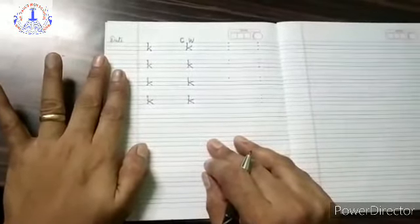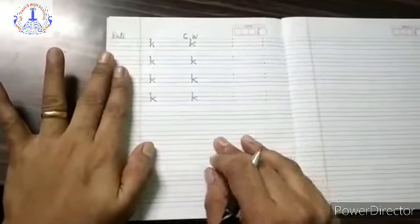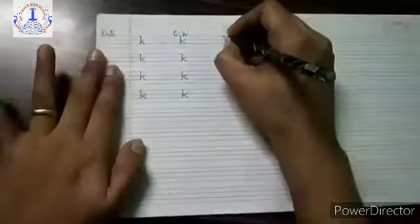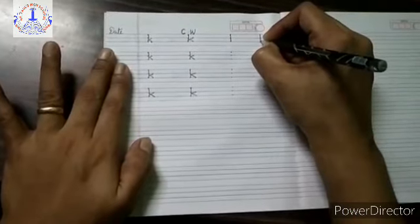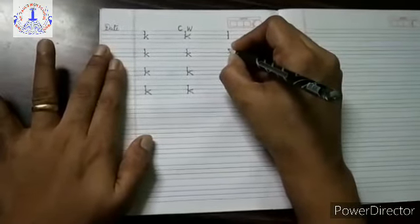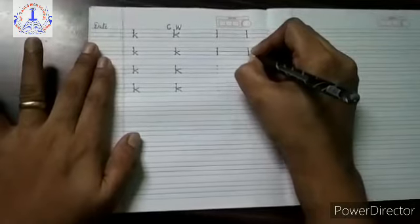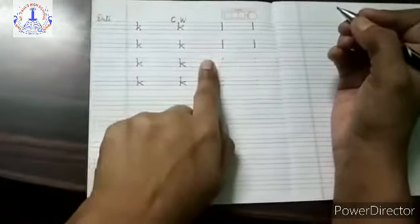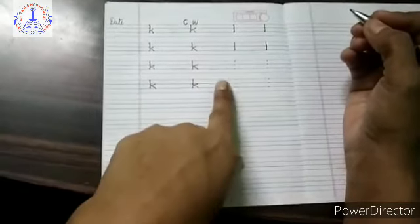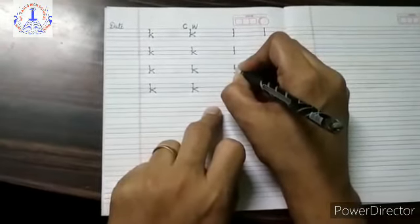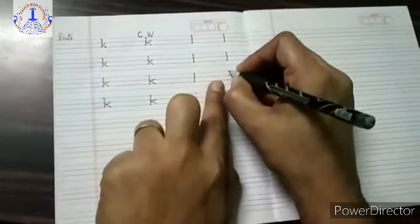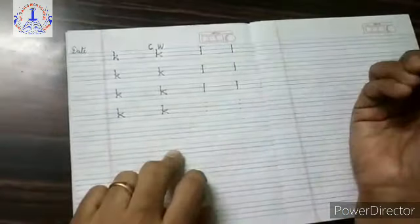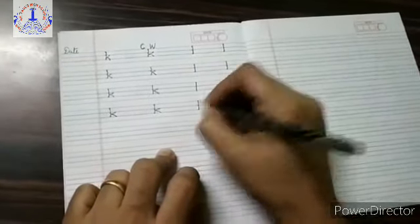Now, teacher will show you how to write small letter L. L is very easy, children. It is only one standing line. One standing line from red line to blue line — this is our small letter L. It is easy children. Just one standing line. And remember children, when you are writing, you have to leave some space between the letters, so it will look neat. Red line to blue line, standing line. Red line to blue line, standing line. Leave some space. Red line to blue line, one standing line.